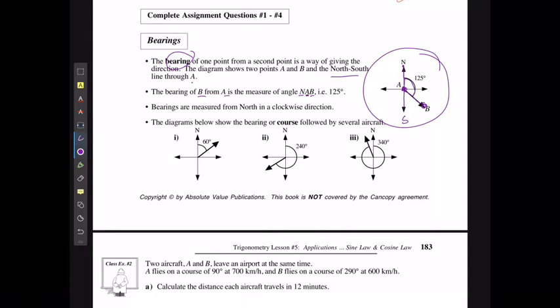The bearings are always going to be measured from north in a clockwise direction. The diagram shows the bearing of course for several aircraft. This would be a bearing of 60 degrees going from north to the origin to the other point. This would be a bearing of 240 degrees. This would be a bearing of 340 degrees.